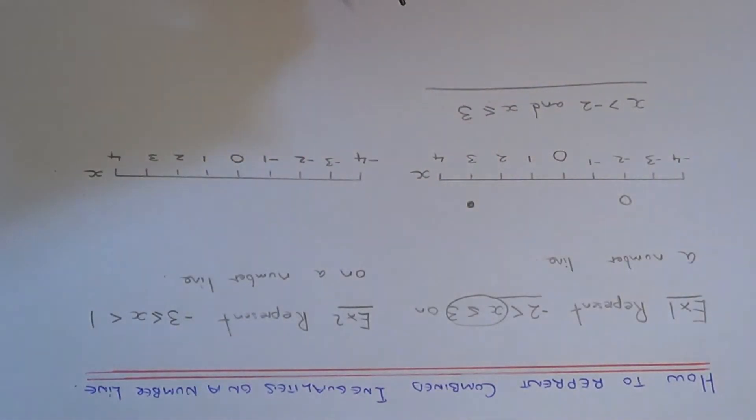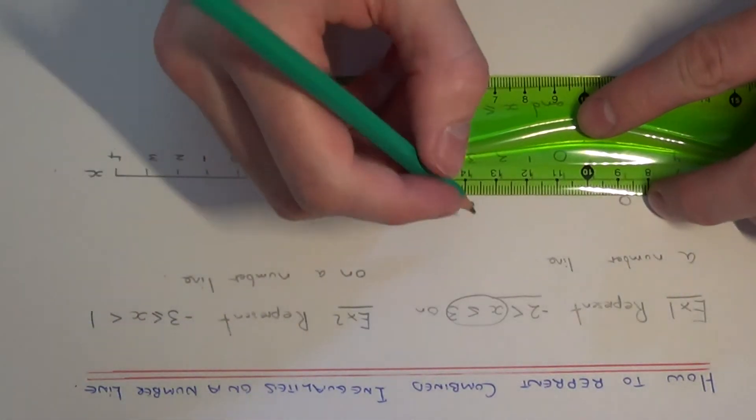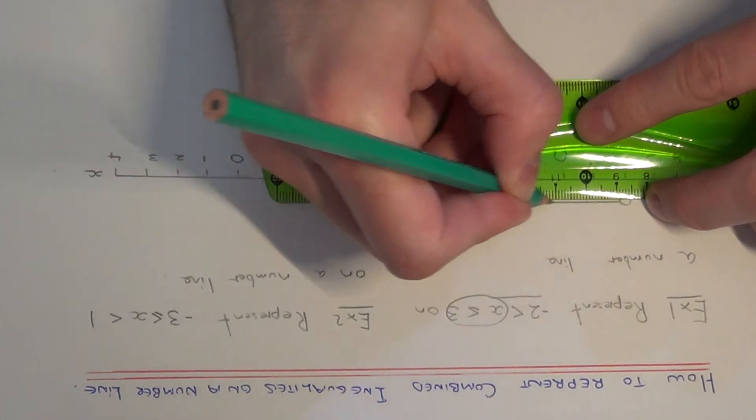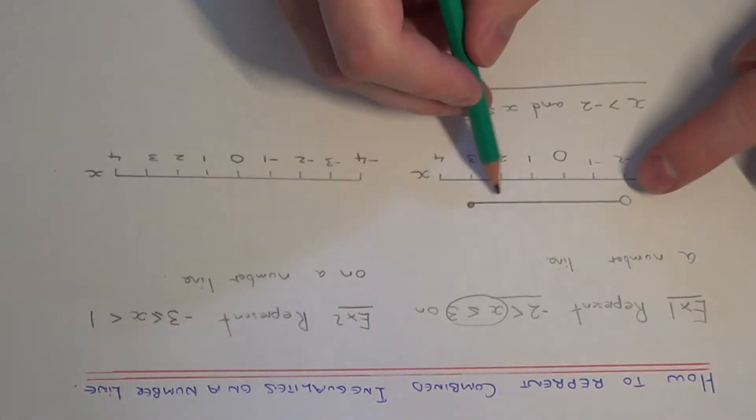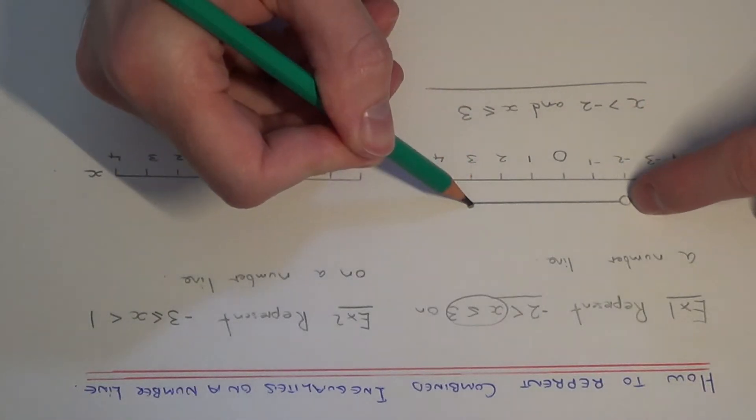And then all we need to do now is do a line connecting the two circles as these are the values of x which satisfy the inequality.